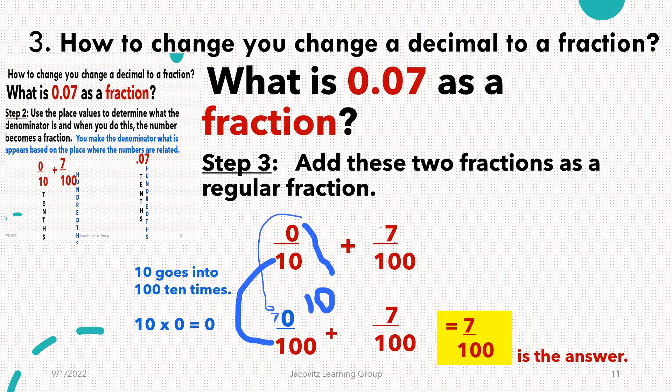And what happens is ten goes into a hundred ten times. Ten times zero is zero. You're getting a common denominator here, which is going to be a hundred. So then you have seven over a hundred here. When you get ready to add this up, it's seven over a hundred. You cannot reduce any further. There's your answer, seven hundredths.